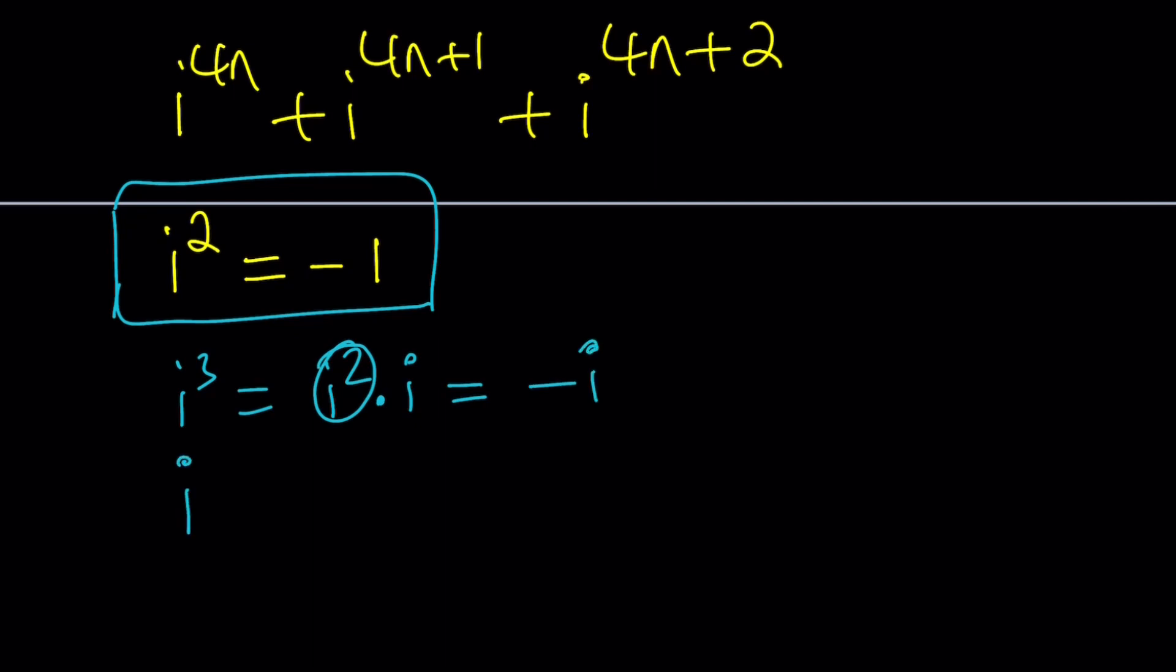If you hear any sounds, that's the cats going crazy, I'm sorry about that. This is their time. i to the fourth is just i squared times i squared, and that is negative 1 squared, which is positive 1. So those are consecutive powers of i,